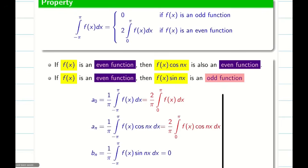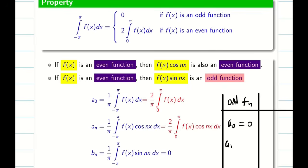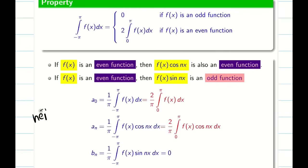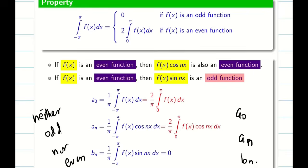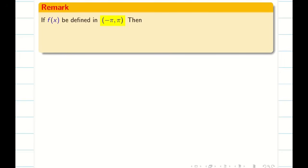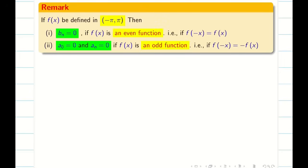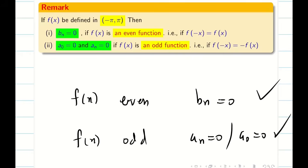In summary: if f of x is odd, then a naught equals 0 and a n equals 0, only b n needs to be found. If f of x is even, then b n equals 0, only a naught and a n need to be found. If the function is neither odd nor even, then all three coefficients a naught, a n, and b n must be computed. Use this property to enjoy solving problems in a simple way.